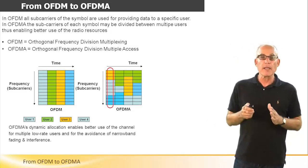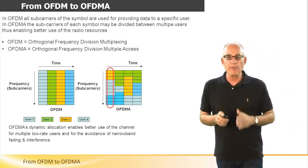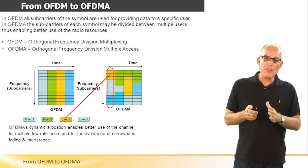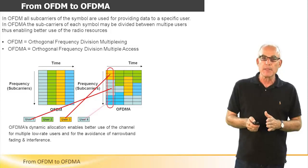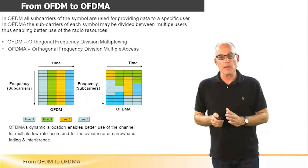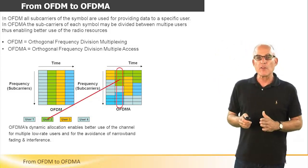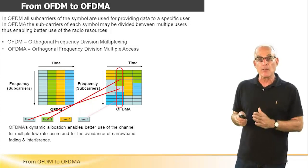For example, at the first symbol, the first symbol from left, there is a location for the yellow subscriber, for the light blue subscriber, and for the blue subscriber. And in the next symbol, there is a location for the green subscriber, for the light blue subscriber, and for the blue subscriber, and so on.